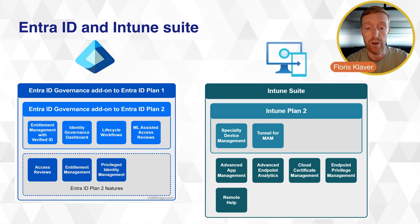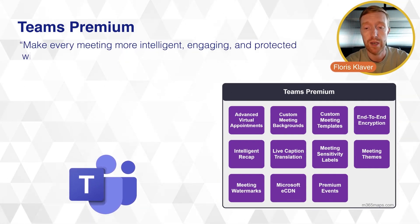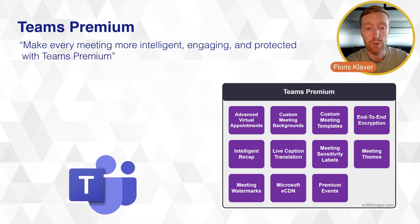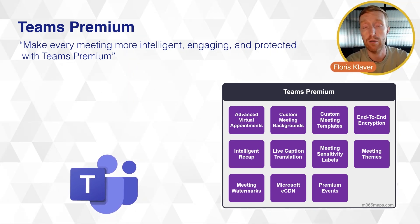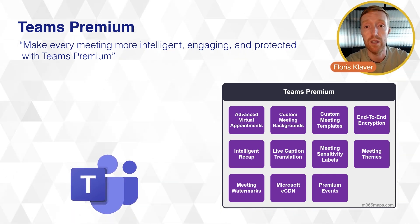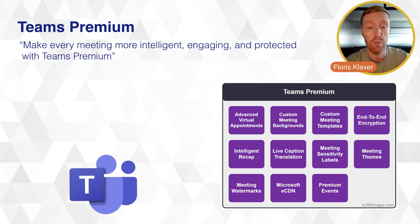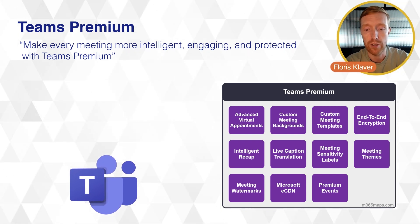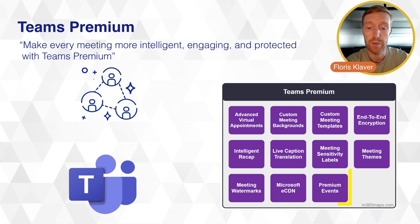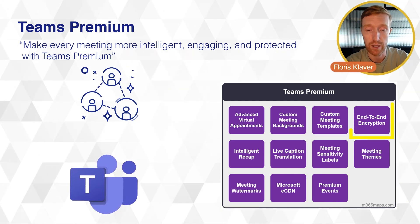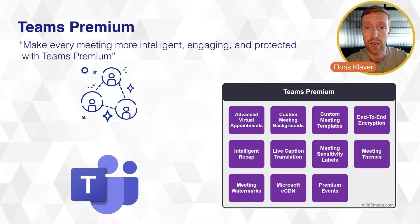The next product I want to cover is Teams Premium, where Microsoft has released a lot of products outside of the Microsoft 365 suite, with the newest one being Teams Premium. Teams Premium is basically the AI version of Microsoft Teams that you're currently using through your E3 or E5 license. Microsoft states it will make every meeting more intelligent, engaging, and protected. It holds additional functionality such as live caption translation, meeting sensitivity labels, premium events, meeting watermarks, custom meeting templates, and end-to-end encryption — a lot of different tools that might make your Teams experience more efficient, better, and secure.